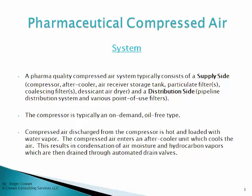A pharma quality compressed air system typically consists of a supply side and a distribution side. On the supply side, there's the compressor, the after cooler, air receiver storage tank, various particulate filters, coalescing filters, and a desiccant air dryer. On the distribution side, you've got the distribution system pipeline itself, but also various points-of-use filters.